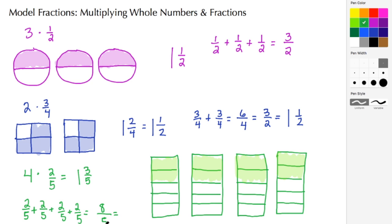When we do the division, five goes into eight one whole time with a remainder of three, and we keep the denominator of five. So this model represents one and three-fifths. That sums up this video on multiplying whole numbers and fractions. Please comment, and as always, thank you for watching.